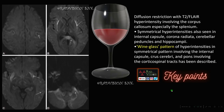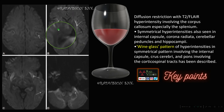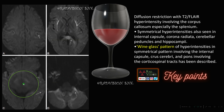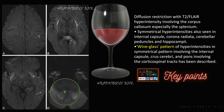Next: a postpartum lady presenting with altered sensorium and seizures. You can see there is restricted diffusion on DWI in the internal capsule, along the corticospinal tracts, in the splenium of corpus callosum, along the crus cerebri, and in the middle cerebellar peduncles. Whenever you get symmetrical restricted diffusion on DWI in the internal capsule, along the corona radiata, along the corticospinal tracts, involving the splenium of corpus callosum, in a wine glass pattern on coronal sections — this clearly resembles the wine glass pattern.